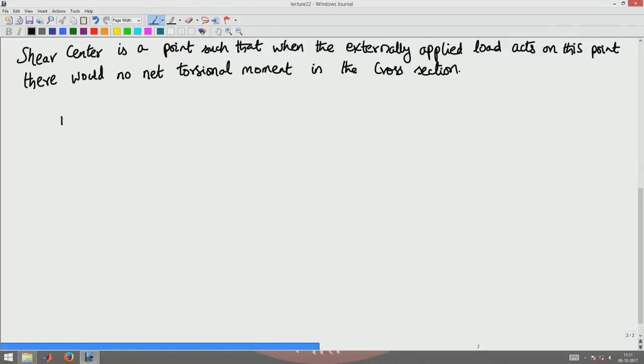For example, if you take an I-section, it is of equal length on either side of the web. So if this is BF, then your center of gravity is at the center. The shear center will coincide with the CG because, as you saw in the last class, when the shear stress distributions are horizontal, there will not be net torsion produced in the cross-section.